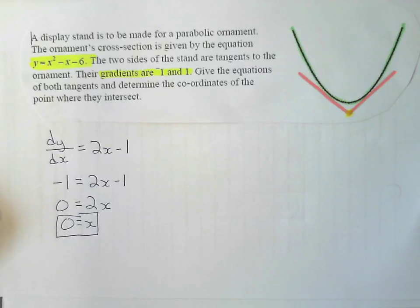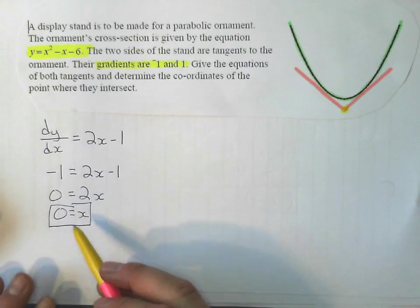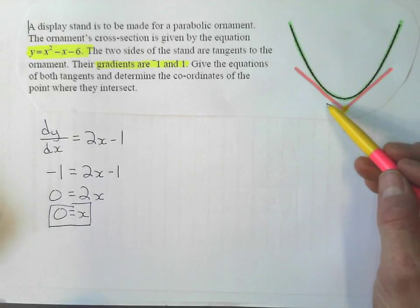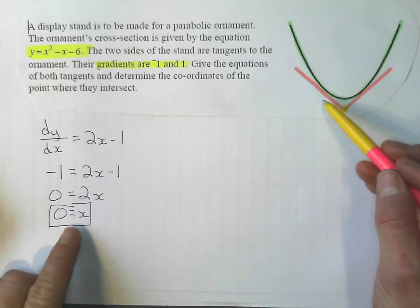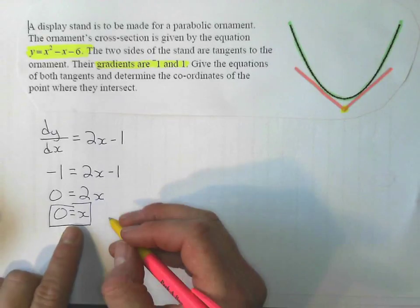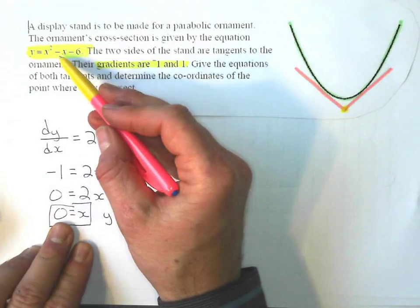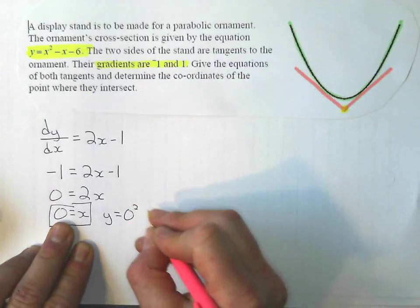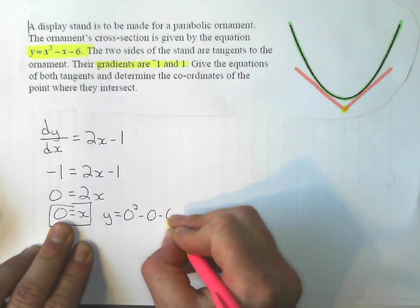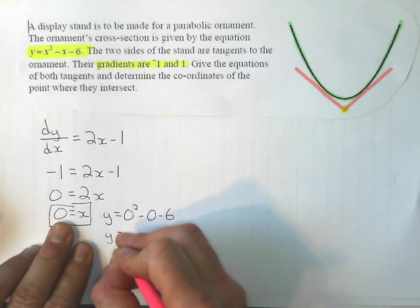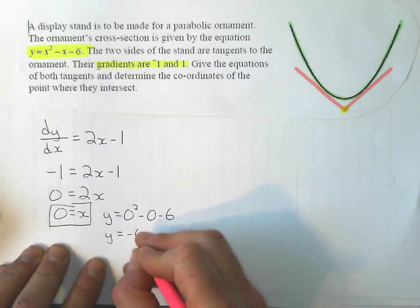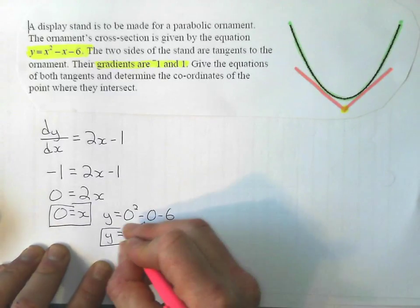Well, now what? Remember what I need to get an equation. I need a point and the gradient. I have the gradient, I have the x-coordinate, and I need the y-coordinate. So to get the y-coordinate, I substitute 0 back into the original equation. That will give me the y-coordinate, which just gives me negative 6.